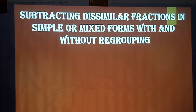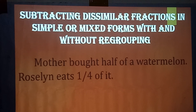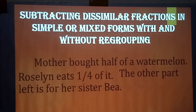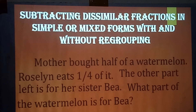Let me start with a problem. Mother cut half of a watermelon. Roseline eats one-fourth of it. The other part left is for her sister Bea. So what part of the watermelon is for Bea? The given information is one-fourth and one-half. Since the topic is subtraction, we will subtract one-fourth from one-half.